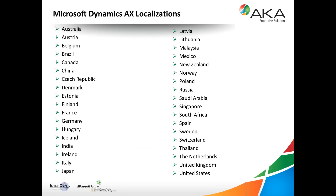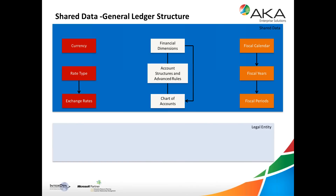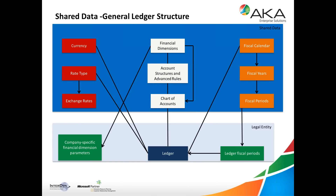Inside AX 2012 we have a single database containing both shared data and entity-specific data. Shared data includes currency exchange rates — a single exchange rate used in consolidation including average rates posted at month-end — as well as financial dimensions and the chart of accounts shared across entities where possible. Each company has its own complete ledger, company-specific financial dimensions or parameters, and fiscal periods.